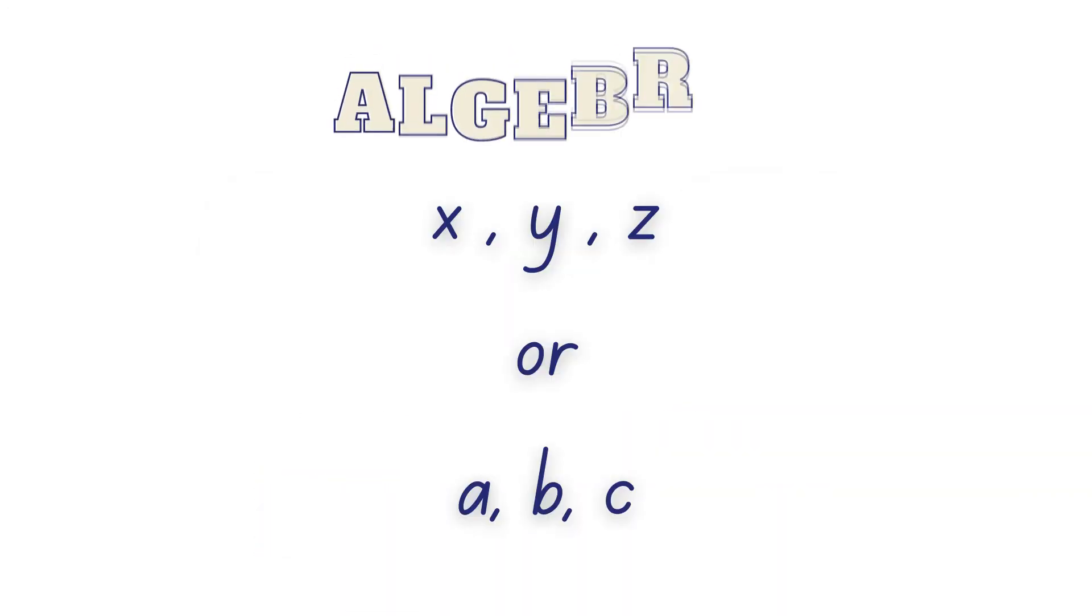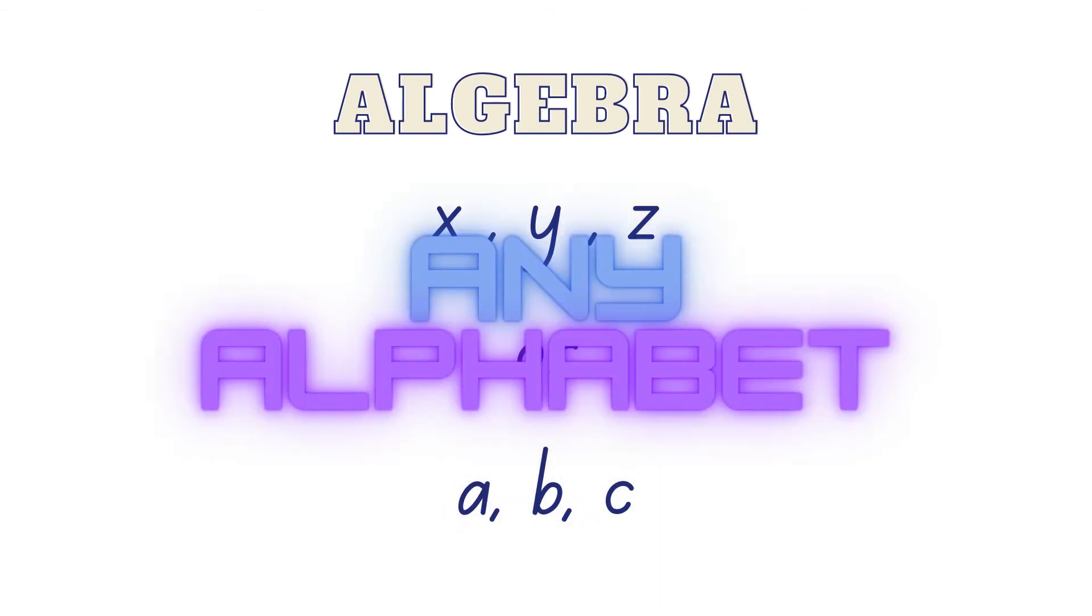But in algebra, we normally use letters to represent the variable quantity instead of initials for our convenience. And these letters are usually X, Y, and Z or A, B, and C, but they can be any alphabet for that matter.